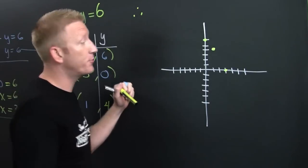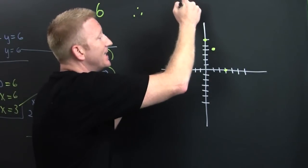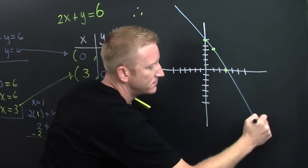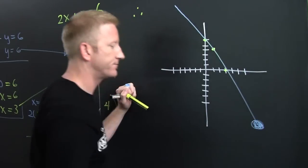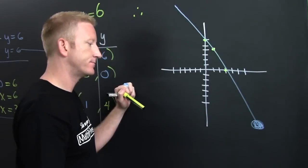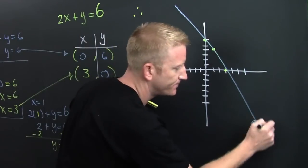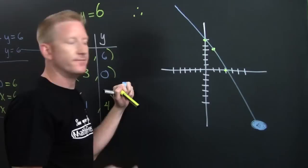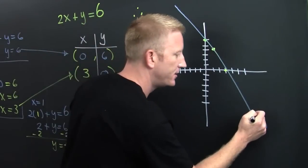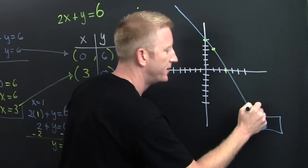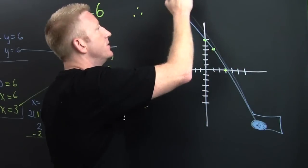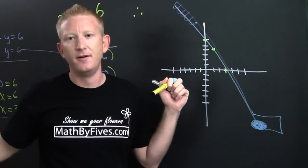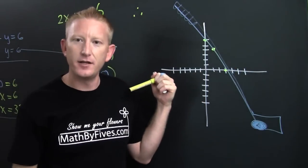Once you have all three of those points, you connect the dots. It was supposed to be a flower, but it turned into a golf club!